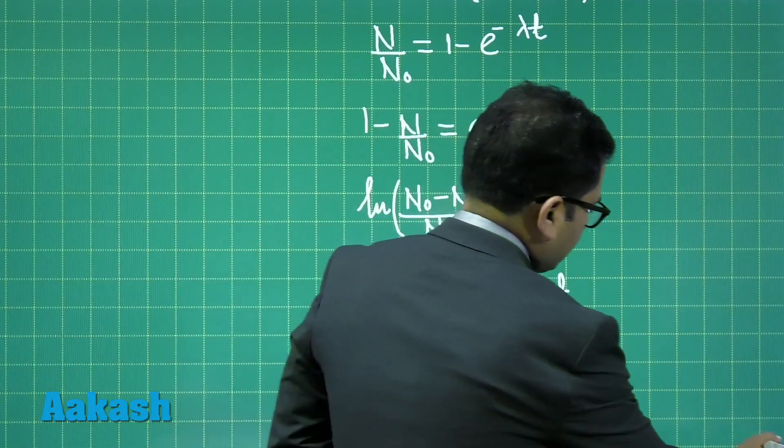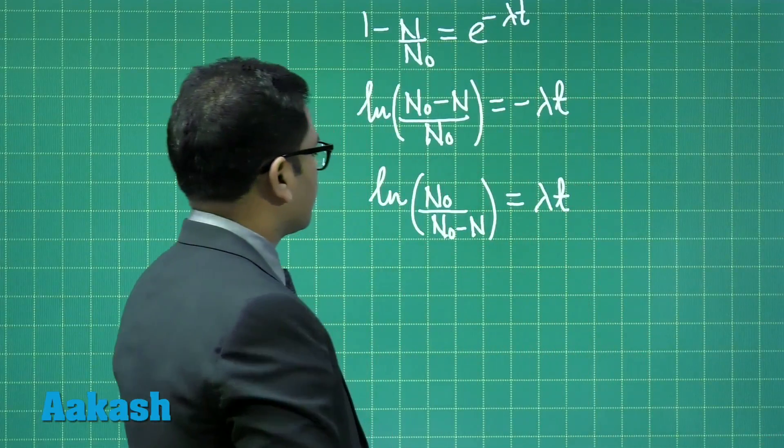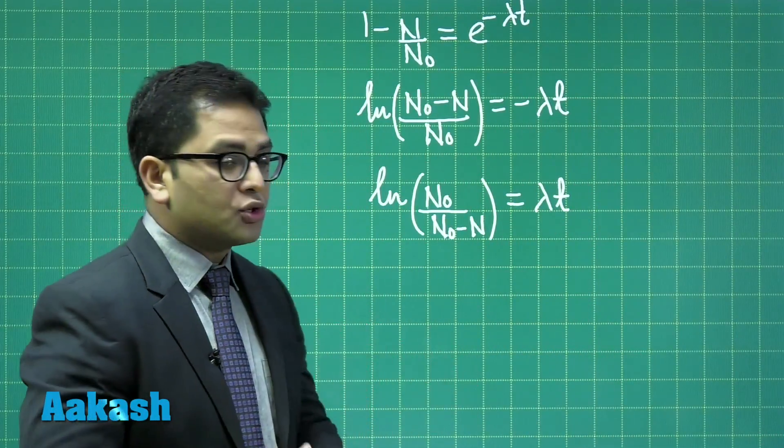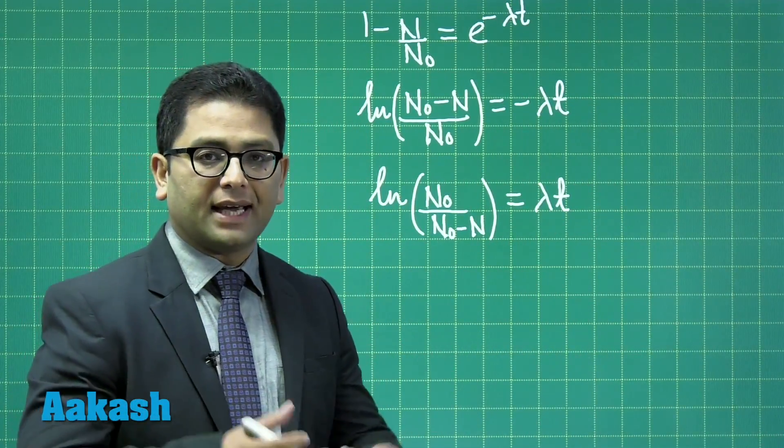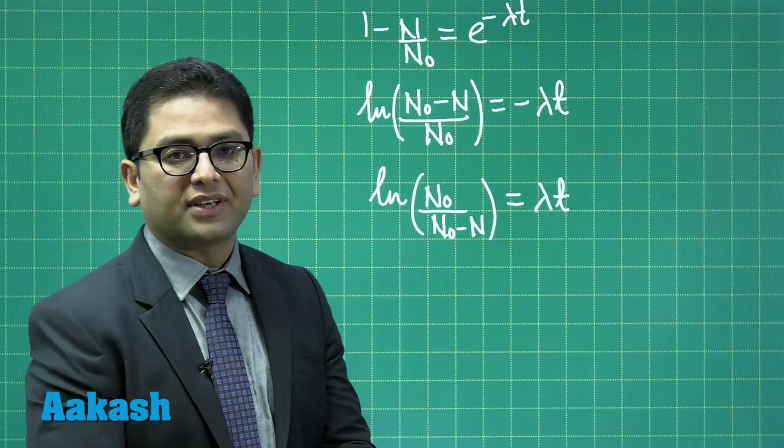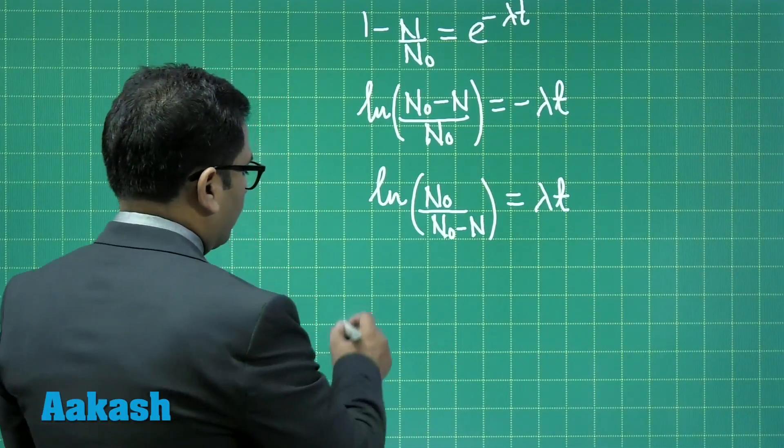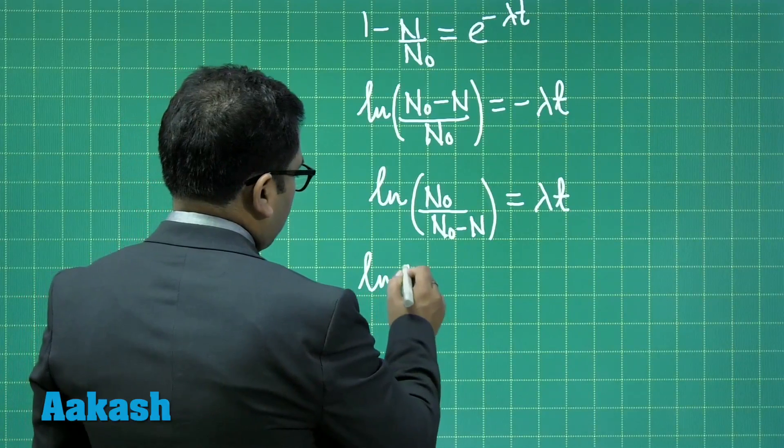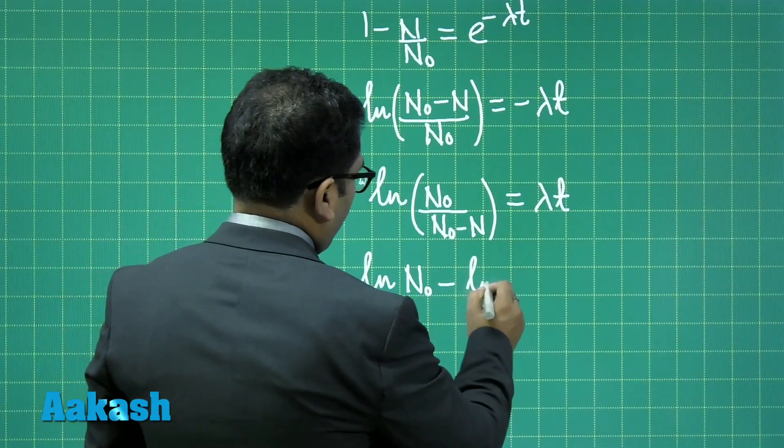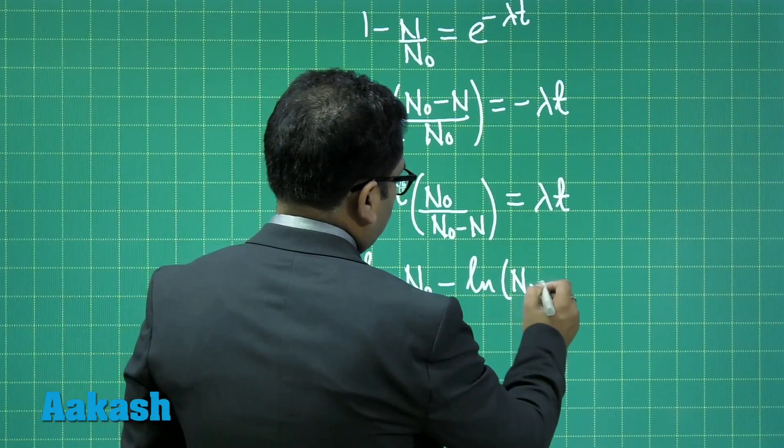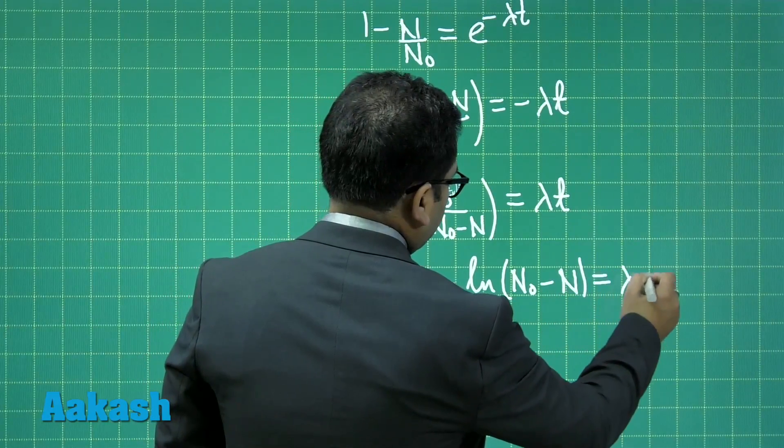All right? So that's a simple property that we have used. Further, it's time to go for the derivative and we'll suitably put into the definition of error. So now what we can do is that log N naught minus log N naught minus N, that is equal to lambda t.